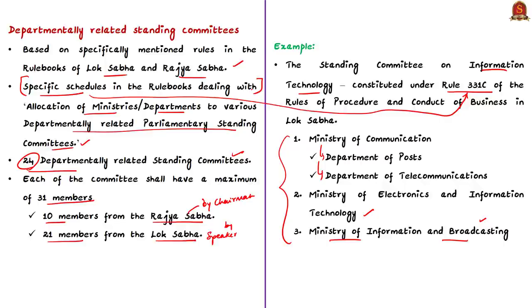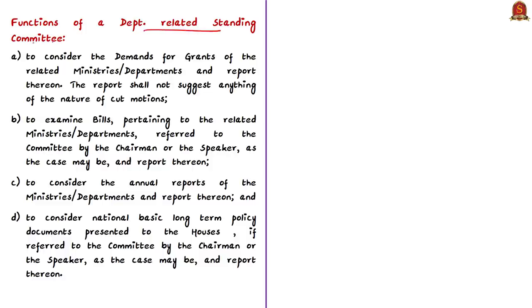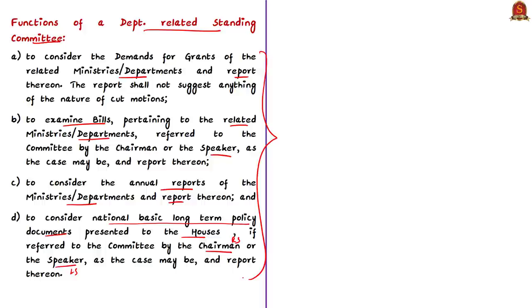The functions of department-related standing committees include: one, to consider the demands for grants of the related ministries or departments and report; two, to examine bills pertaining to the related ministries and departments referred by the chairman of Rajya Sabha or the speaker of Lok Sabha; three, to consider the annual reports of ministries or departments and report; and four, to consider national basic long-term policy documents presented to either house if referred to the committee by the chairman of Rajya Sabha or the speaker of Lok Sabha.